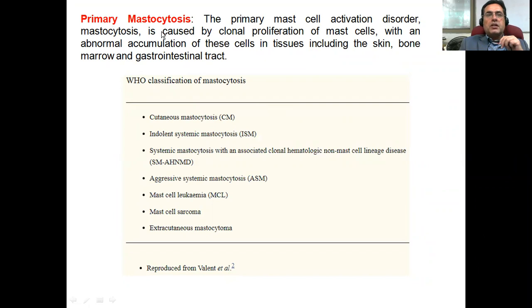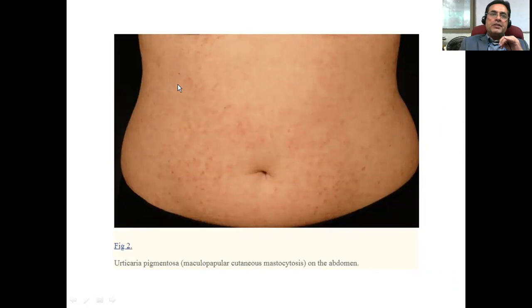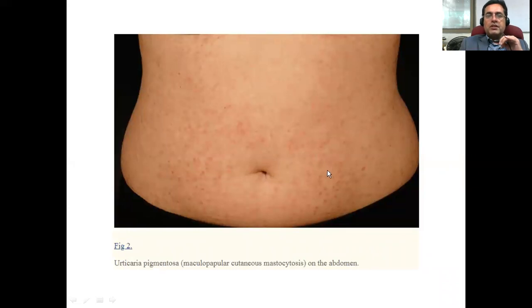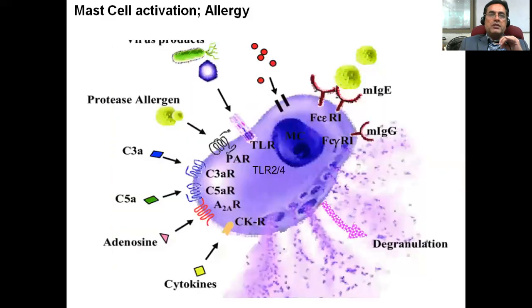Primary mastocytosis is the sign you would experience as a result of activation, accumulation, and proliferation of the mast cells in tissues like the skin, bone marrow, and gastrointestinal tract. If the mast cells accumulate abnormally and proliferate abnormally in the skin, you can find red papules or some kind of rash — this is urticaria pigmentosa. This is the primary mastocytosis, but mastocytosis can also be secondary. In most cases, it is secondary mastocytosis in which you find more pronounced symptoms, for instance in the case of allergy.